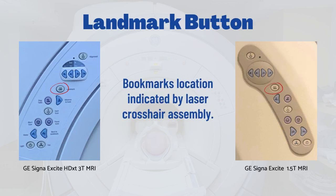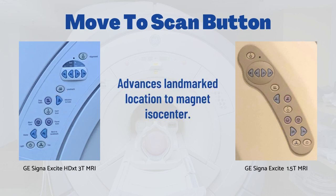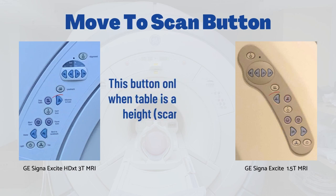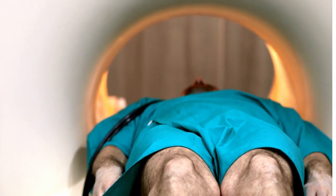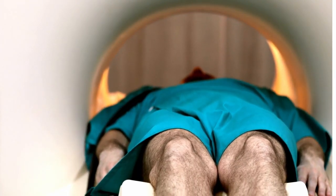The landmark button bookmarks the location defined by the laser alignment lights. Once the landmark has been set, the move to scan button automatically drives the patient table towards the magnet isocenter.